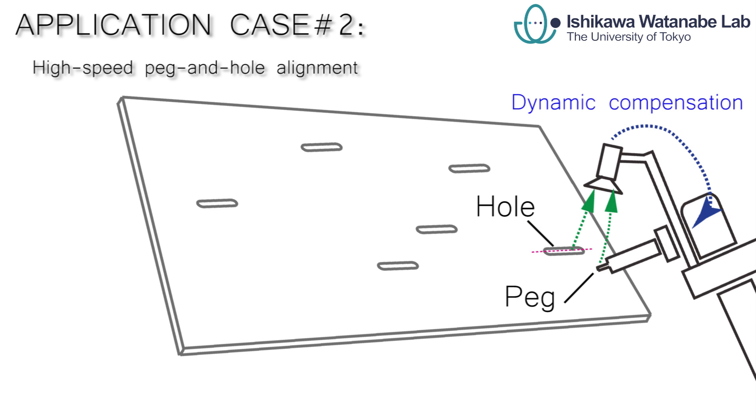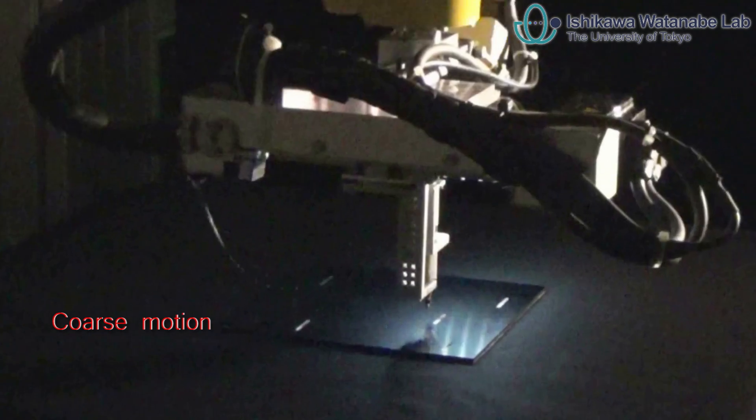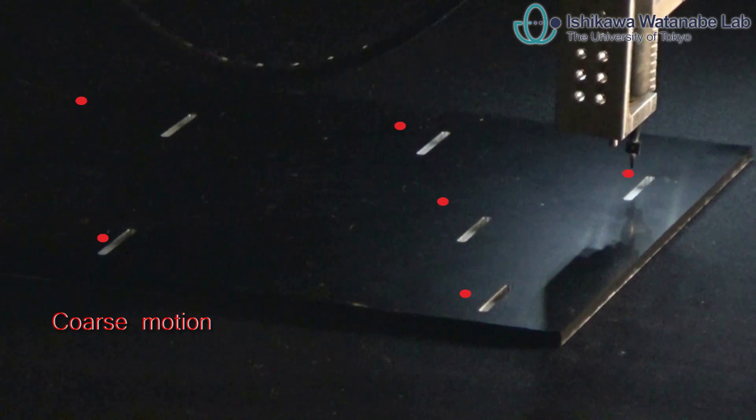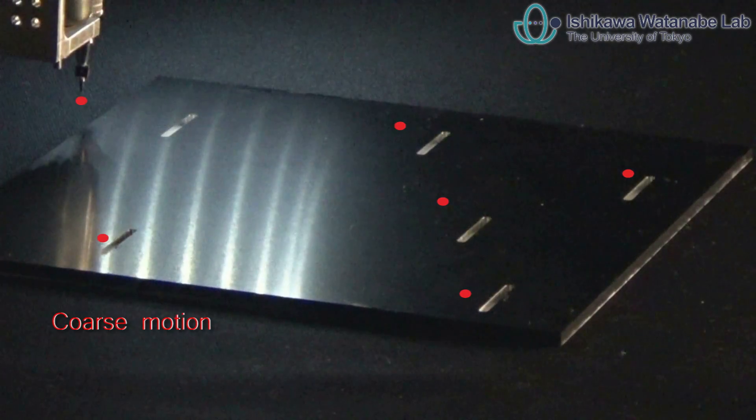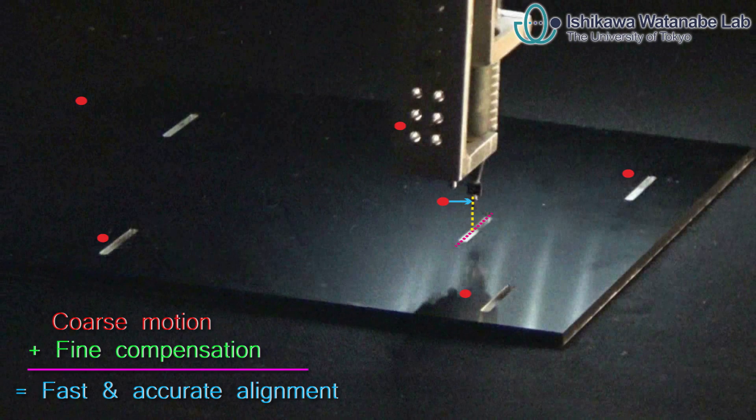The same technology can be applied in high-speed peg-and-hole alignment. Here, we require the main robot to move at high speed while the pose of the workpiece is uncertain. As can be seen, the coarse motion is rough and can be taught randomly within a certain range of each hole. Letting the main robot perform the coarse motion, fast and accurate alignment can be achieved through fine compensation of the high-speed robotic module.